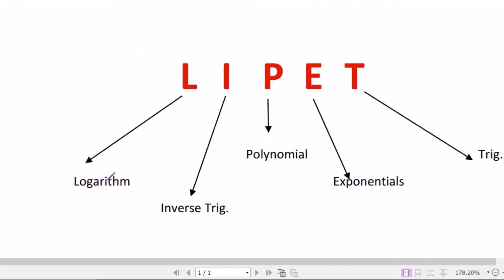If you don't have a logarithmic function, then if you have an inverse trigonometric function, you can use u equals that inverse trig function. If you don't have these two functions in your integrand, then you can select polynomial as your u.